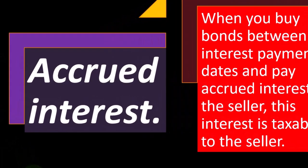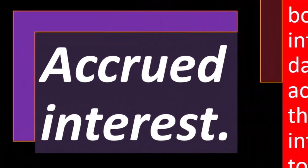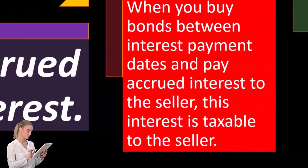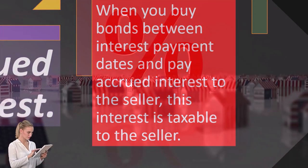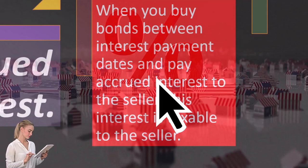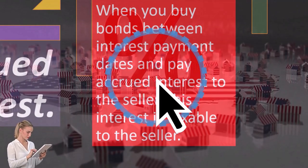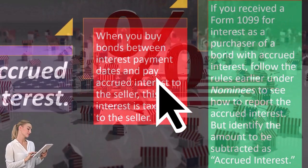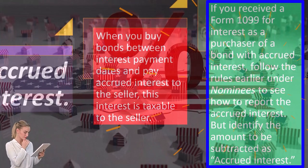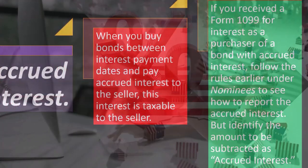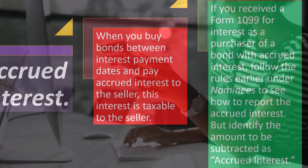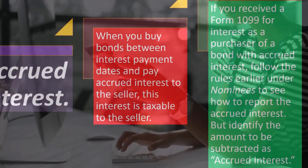Accrued interest is interest that has increased but possibly hasn't been received yet. When you buy bonds between interest payment dates and pay accrued interest to the seller, this interest is taxable to the seller. If you received a form 1099 for interest as a purchaser of a bond with accrued interest, follow the rules under nominees to see how to report it.